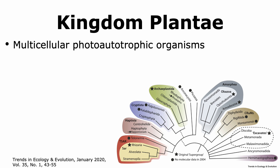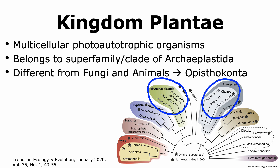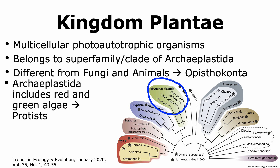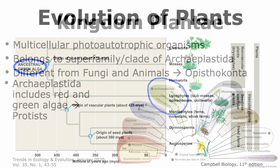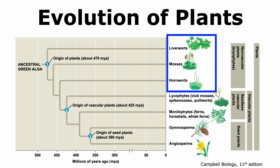All organisms of kingdom plantae belong to the superfamily of archiplastida. This is different from fungi and animals, which belong to the supergroup of opisthokonta. In addition to plants, archiplastida includes the red and green algae, which are protists. All plants evolved from ancestral green algae. The first plants arose around 470 million years ago and were the non-vascular plants, also called bryophytes. These include the current-day liverworts, mosses,